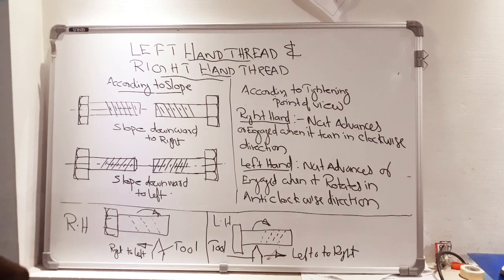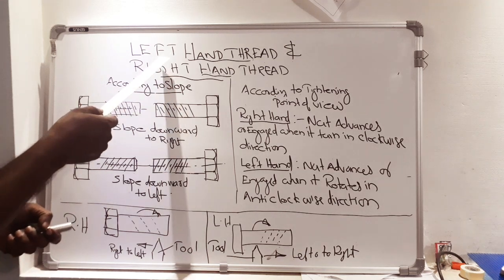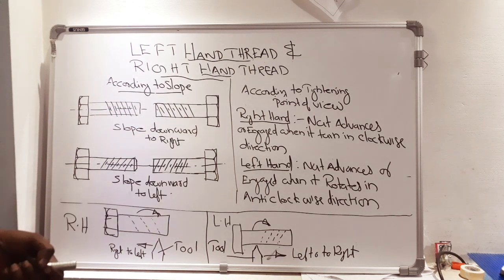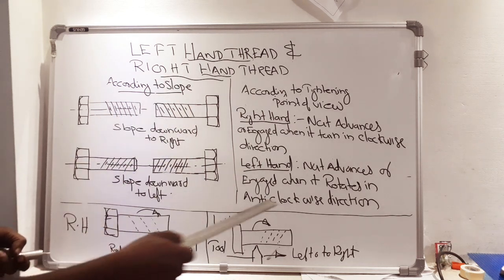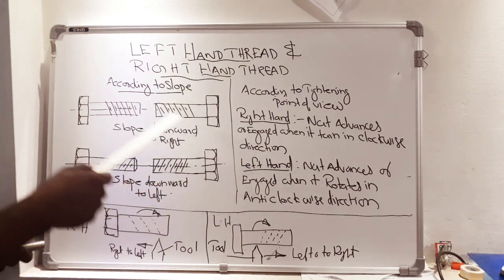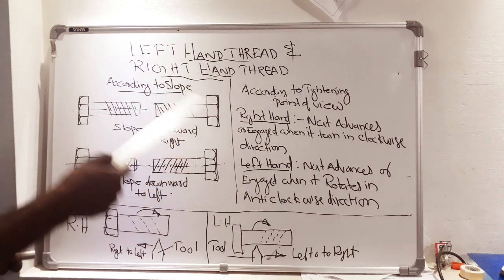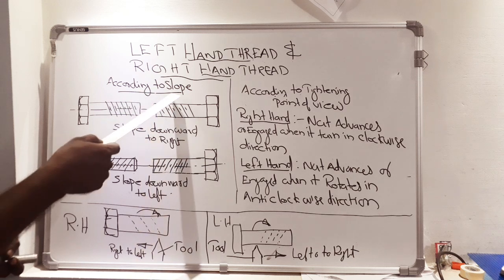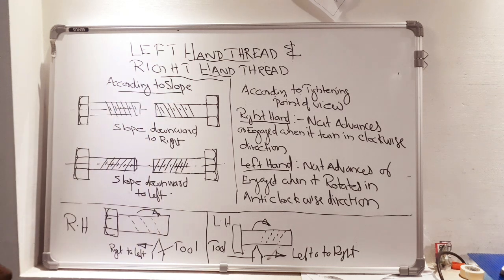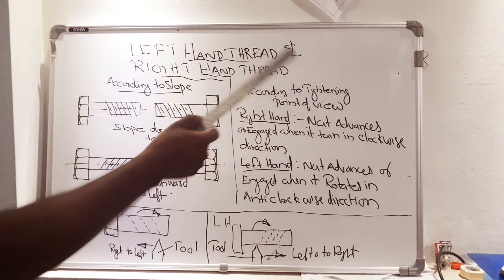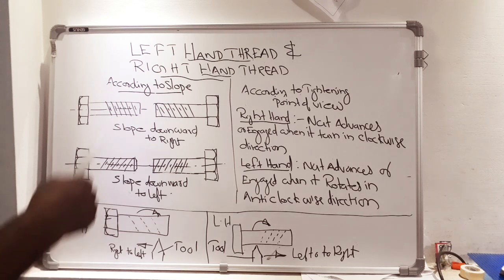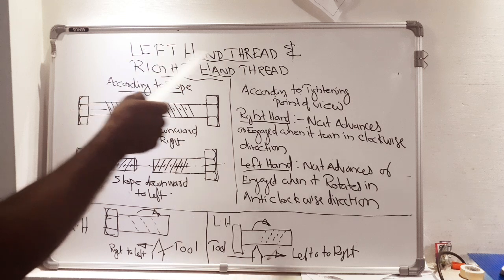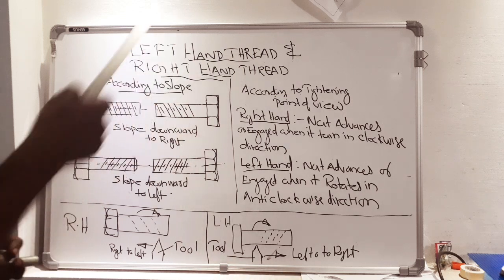Here I am describing what you mean by left-hand and right-hand thread. This can be classified according to three methods: first, according to their slope; second, according to their tightening point of view; and third, according to cutting point of view. These are the three major classifications associated with left-hand and right-hand thread.